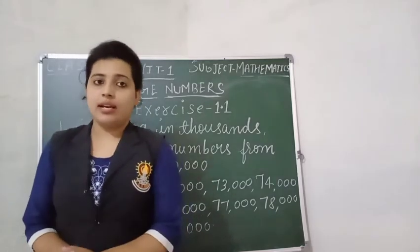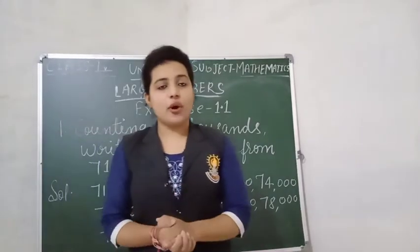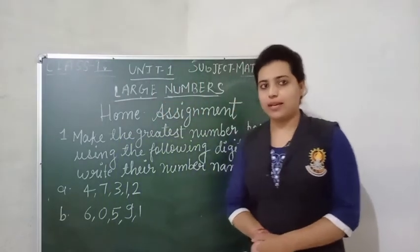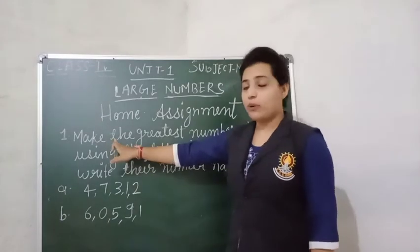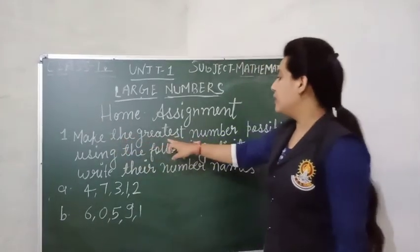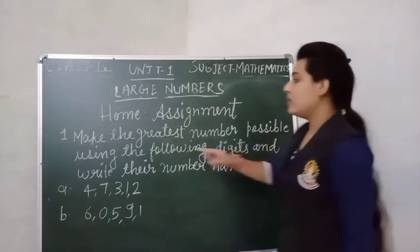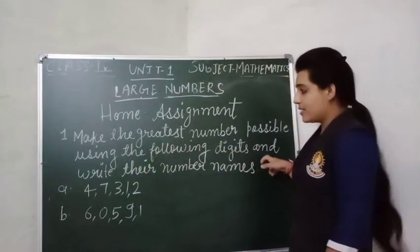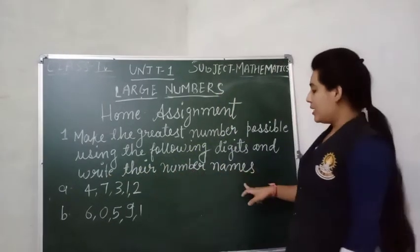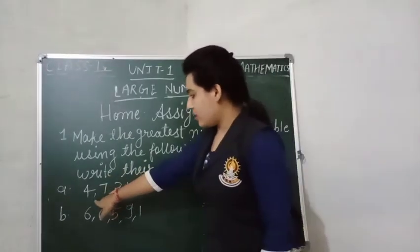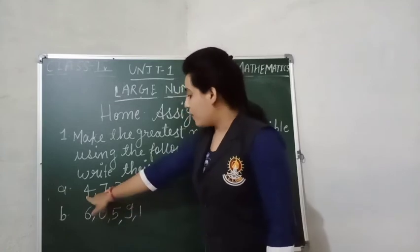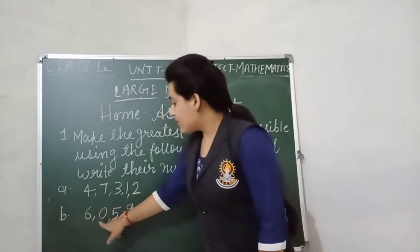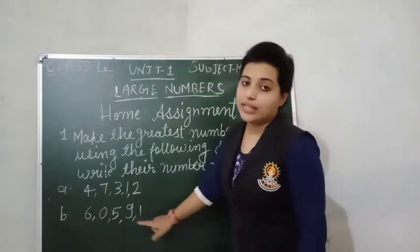So students, our exercise 1.1 is over. Now, your today's home assignment is: question 1, make the greatest number possible using the following digits and write their number names. First: 4, 7, 3, 1, 2. And B: 6, 0, 5, 9, 1.